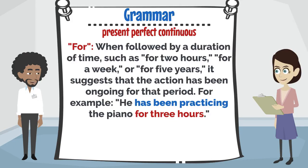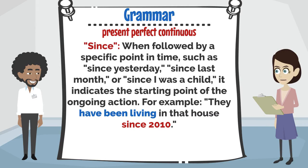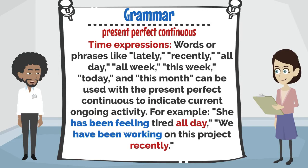For, when followed by a duration of time such as 'for two hours,' 'for a week,' or 'for five years,' suggests that the action has been ongoing for that period. For example: he has been practicing the piano for three hours. Since, when followed by a specific point in time such as 'since yesterday,' 'since last month,' or 'since I was a child,' indicates the starting point of the ongoing action. For example: they have been living in that house since 2010. Time expressions — words or phrases like lately, recently, all day, all week, this week, today, and this month — can indicate current ongoing activity. For example: she has been feeling tired all day; we have been working on this project recently.